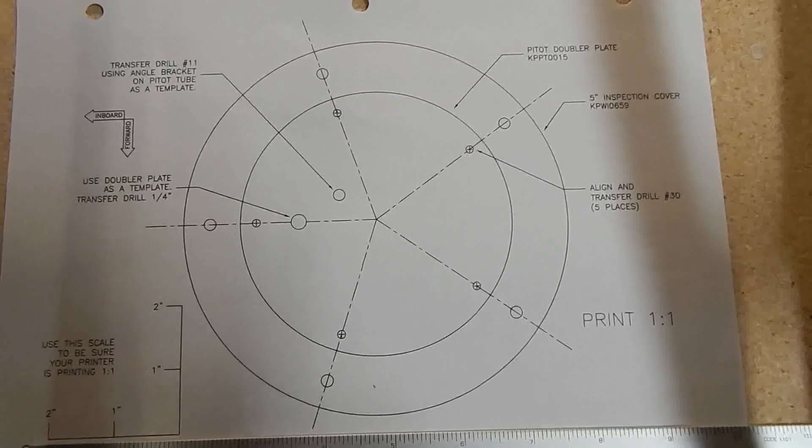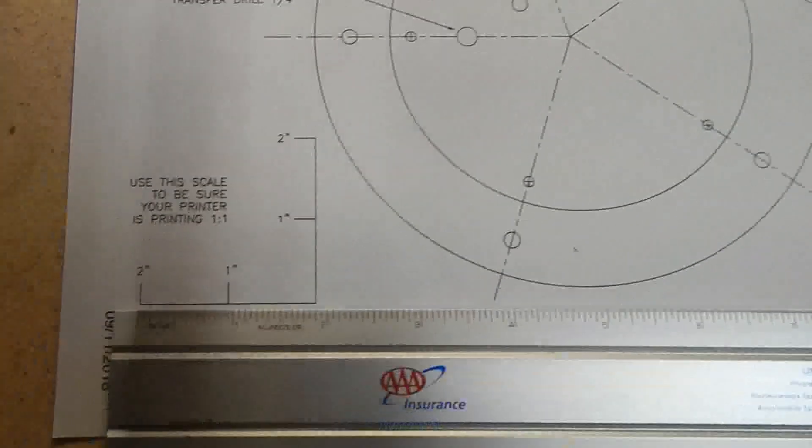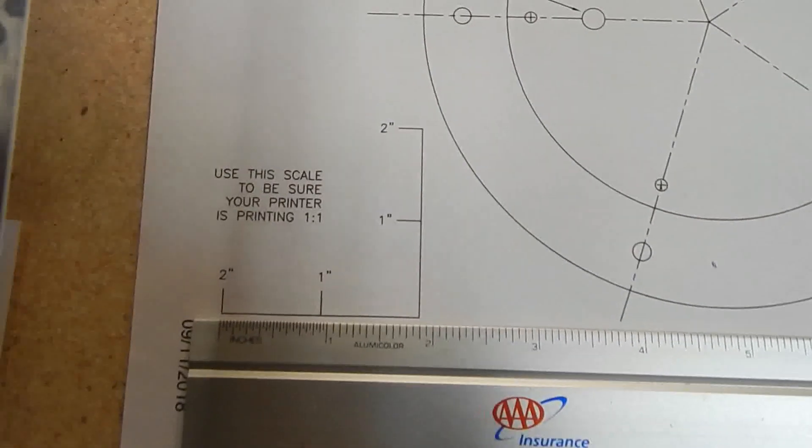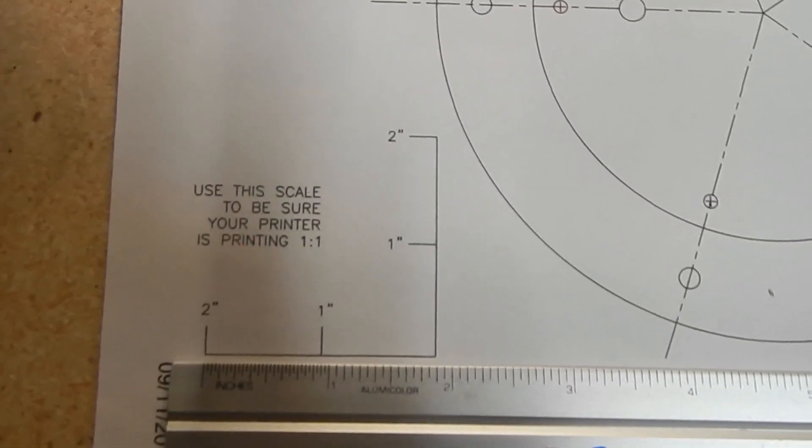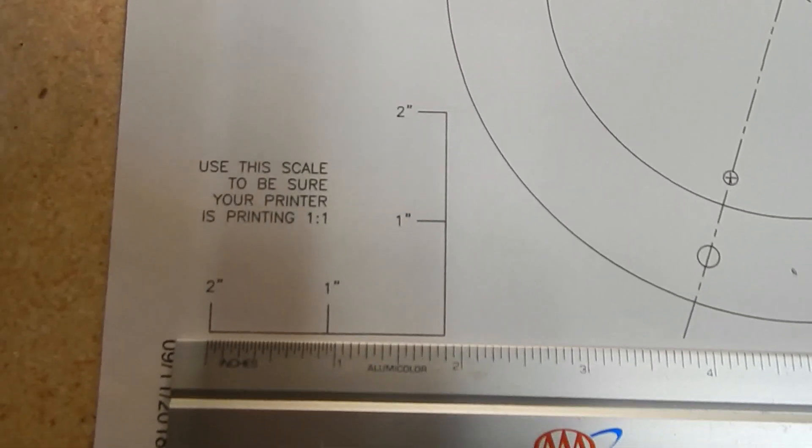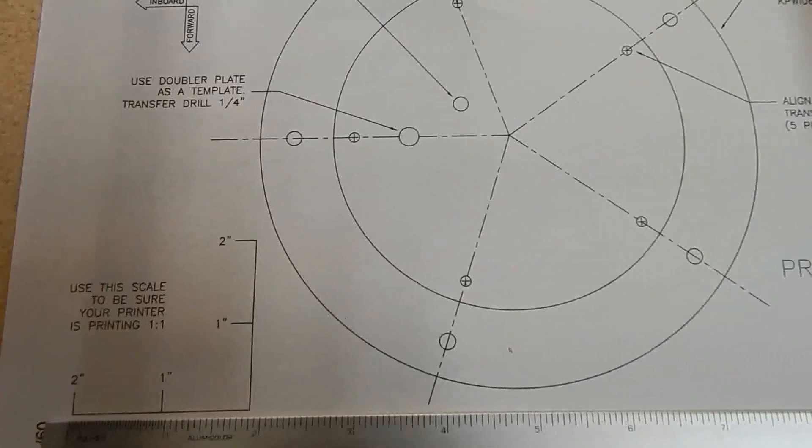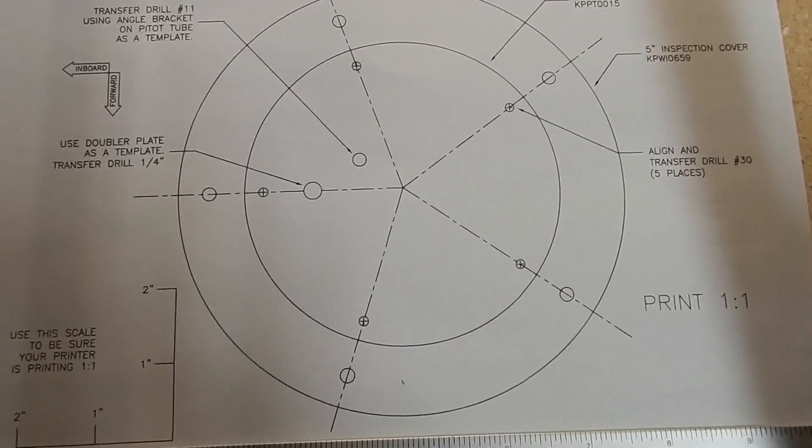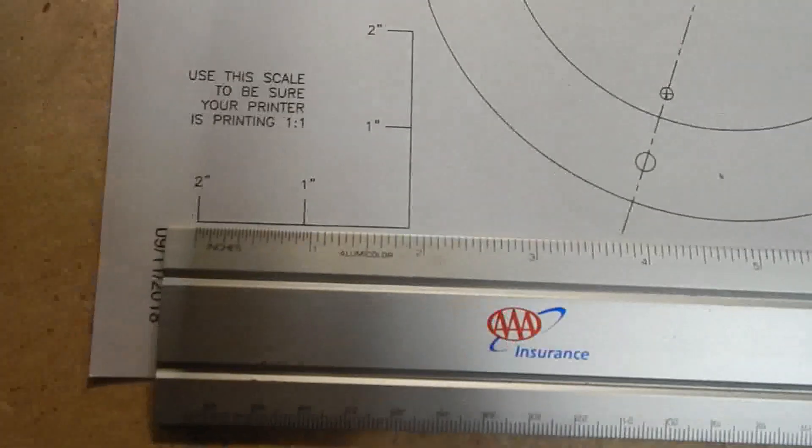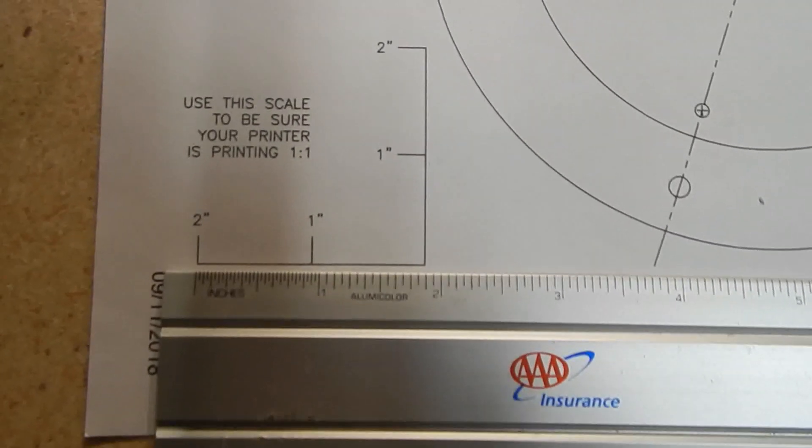There is an inspection cover template for the doubler, and down in the left corner, they give you a little grid to determine if your printer prints one to one. I did check mine, and it did not match up. So I took the sheet and went to my copy machine, and copied it at 106%, and mine then came out to one-to-one.